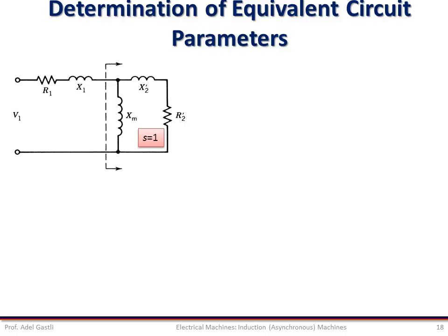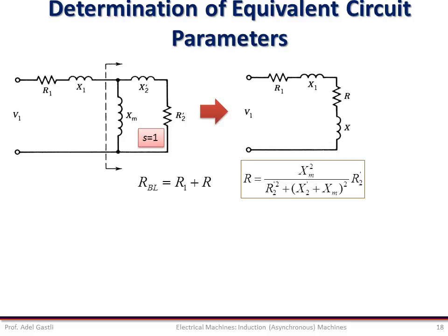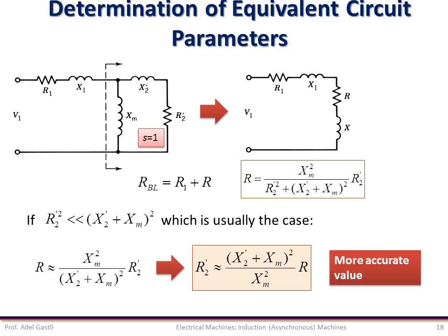To have a more accurate circuit, we put back the magnetizing reactance branch in the equivalent circuit during blocked rotor condition. This equivalent circuit can be converted to one where R and X are the equivalent series resistance and reactance of the parallel connection of XM, X'2, and R'2. The blocked resistance R_bl will be the sum of R1 and an equivalent resistance R, which is R'2 + jX'2 in parallel with XM. Since R'2 is usually very small compared to X'2 + XM, we can obtain R accordingly, and deduce a more accurate value of R'2 from the resulting equation.